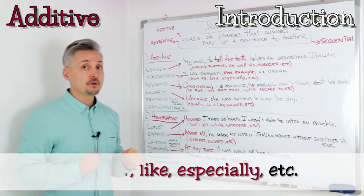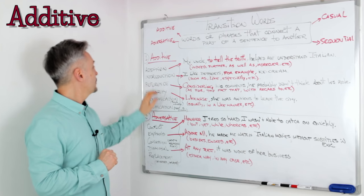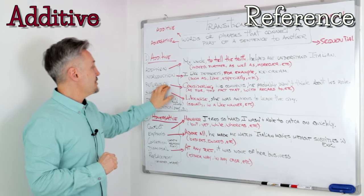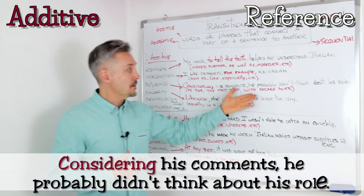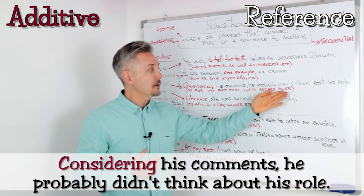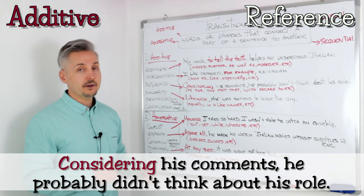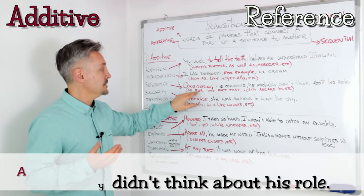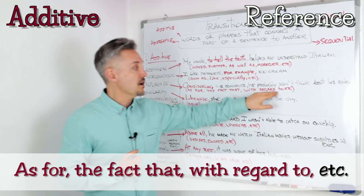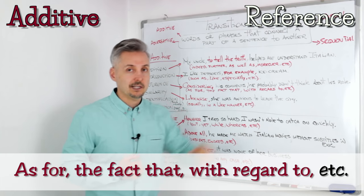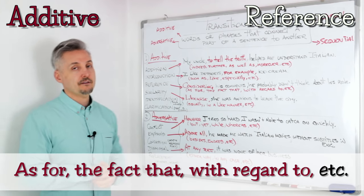The third subgroup of the additive group is reference. For example: 'Considering his comments, he probably didn't think about his role.' 'Considering' can be replaced with 'as for,' 'the fact that,' 'with regard to,' etc. These are all examples of reference transition words.